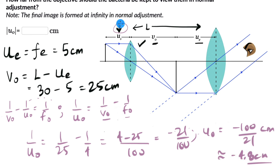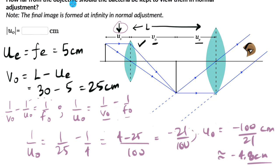So this distance is 4.8 centimeters to the left of the objective lens. We write the magnitude, removing the negative sign, so the answer is 4.8 centimeters.